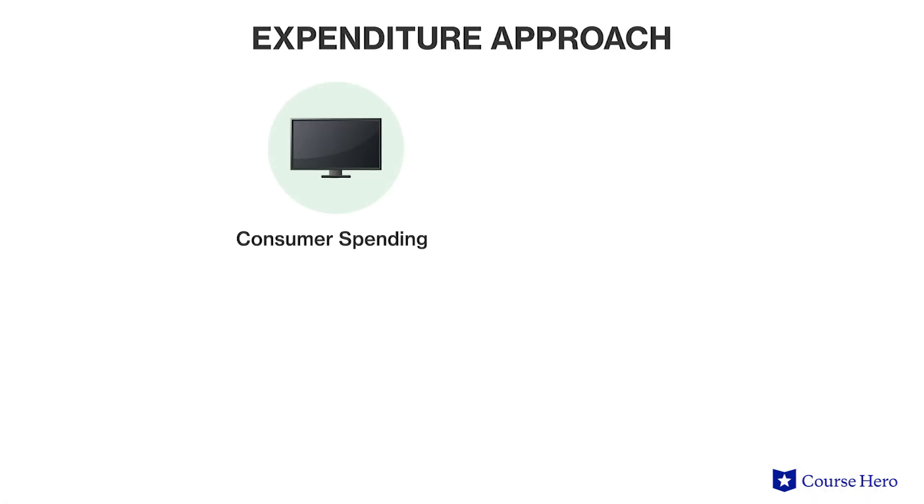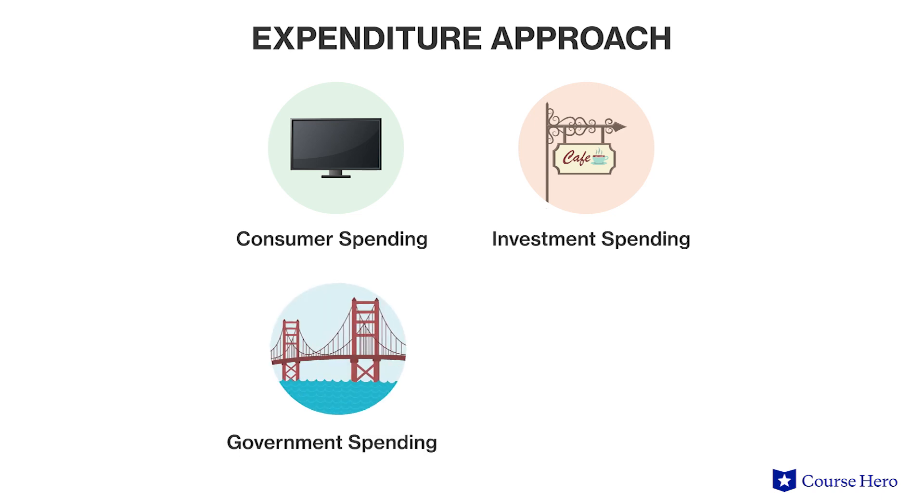Consumer spending, which is the total individual and household purchases of consumer goods and services. Investment spending, which refers to spending by firms on business capital, residential capital, and inventories. Government spending, which is money spent by the government for various government programs. And net exports, which is the country's total value of exports minus the value of their imports.